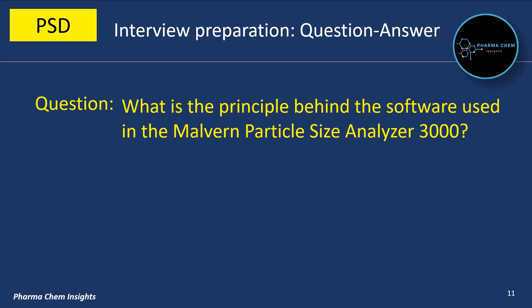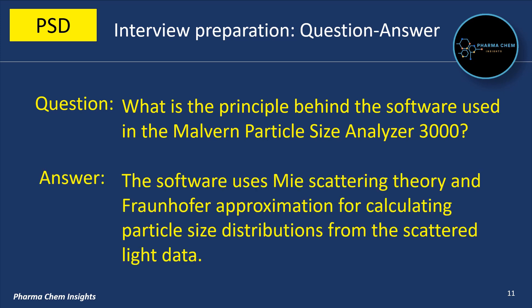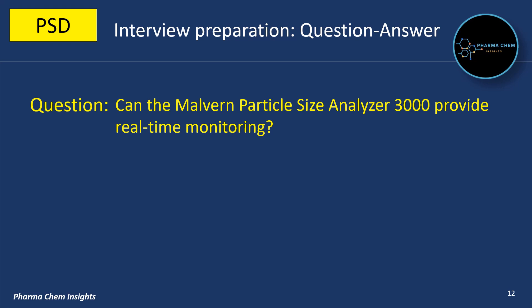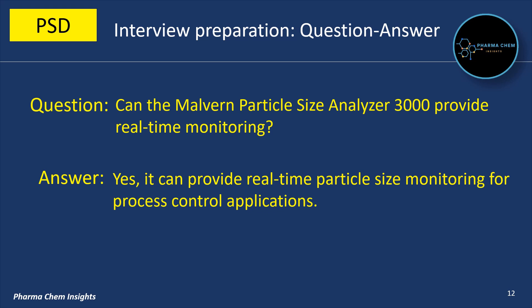Next question: what is the principle behind the software used in the Malvern Particle Size Analyzer 3000? The software uses Mie Scattering Theory and Fraunhofer approximation for calculating particle size distribution from the scattered light data. Can it provide real-time monitoring? Yes, it can provide real-time particle size monitoring for process control applications.